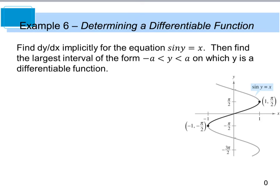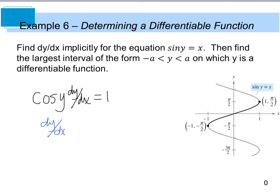For our last example today, we are going to find the derivative implicitly for the equation sine y equals x. Once we've done that, we're then going to find the largest interval from one value to another in y for which y is a differentiable function. Sine y equals x is not a differentiable function because the graph looks something like this. Let's go ahead and find the derivative. The derivative of sine y equals x is cosine y, and because we have to take it with respect to x, we write dy/dx equals 1. If I isolate dy/dx, we're left with dy/dx equals 1 divided by cosine y.